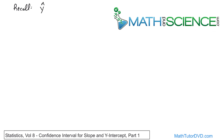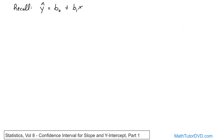Recall that y-hat is the regression line, and we call it b-naught plus b1·x. This comes from data — the coefficients b-naught and b1, the y-intercept and the slope, come from the sample data. So if you had 10, 12, 15, or 20 sample data points, they would be calculated from that data. Because of that, we say the regression line is a sample statistic.